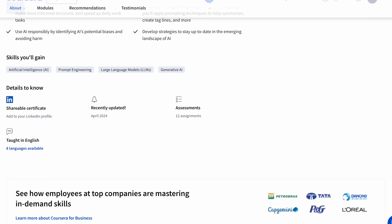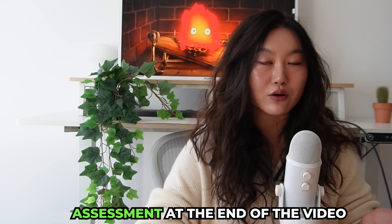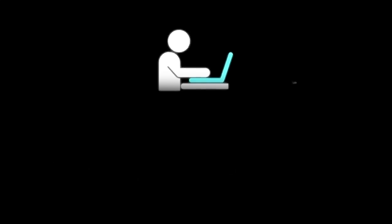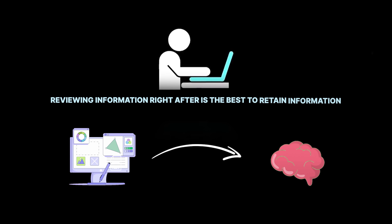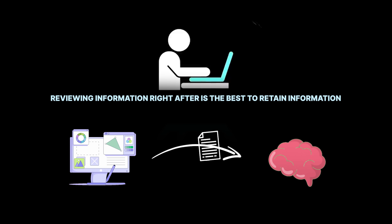I took Google's AI Essentials course for you, so here's the cliff notes version to save you the eight hours. It's not enough for you just to listen to me tell you stuff, so I've also included a little assessment at the end of this video to help you remember everything that you learned, because research shows that immediately reviewing information is the best way to retain it.